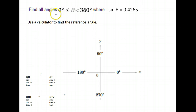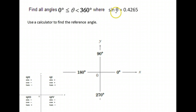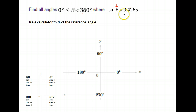In this question, we're asked to find all angles theta that are between 0 and 360 degrees where the sine is 0.4265. Notice we're looking for the angle and we know its sine ratio.